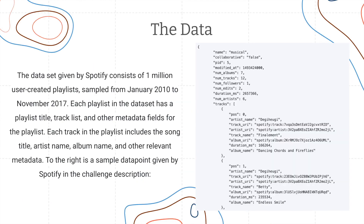The dataset we're using was provided by Spotify and consists of 1 million user-created playlists. Each playlist in the dataset has a title, track list, and other metadata fields, and each track in the playlist includes the song title, artist name, album name, and other relevant metadata. To the right we see an example of the data that we're using.